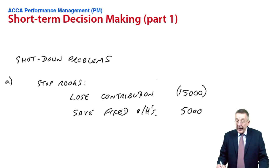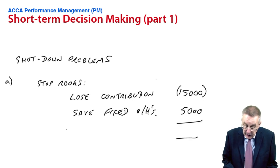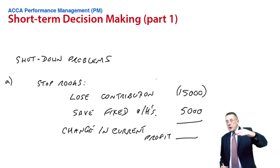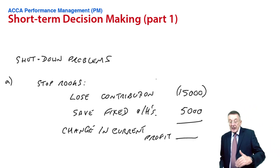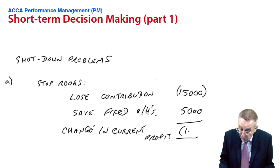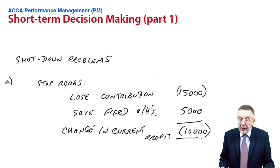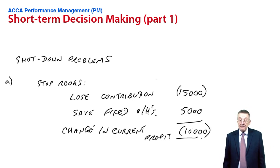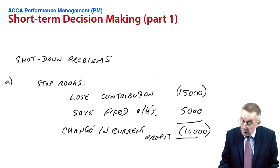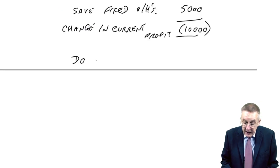So what's the overall effect on the company's profit? Losing that contribution will reduce our current profit by 15,000. Saving fixed overheads will increase our current profit by 5,000. So overall, the current profit would fall by 10,000. Therefore, we should not stop rooks.